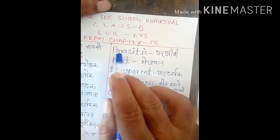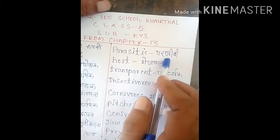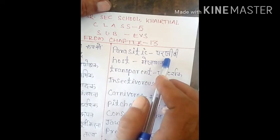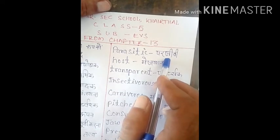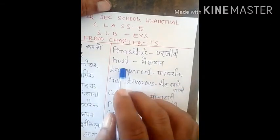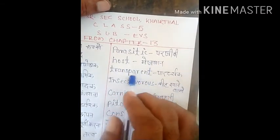Next word is 'parasitic', P-A-R-A-S-I-T-I-C. Some plants live on other green plants to derive nutrients from them — un ko hum kehte hain parasitic plants. Matlab, doosron se apna bhojan lete hain. Next word is 'host', meaning 'mayjwaan'. Us par humne kaafi discussion kiya tha.